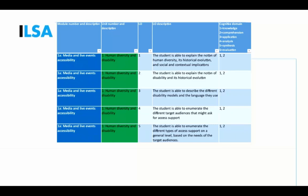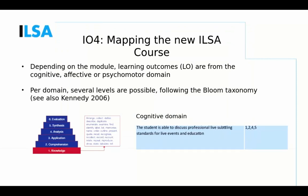This is a fragment of the Excel spreadsheet. In the first column is the name of the module — 1a. The second column shows one of the units of that module, in this case 'human diversity and disability.' There are five learning outcomes for that particular unit described across subsequent columns. When designing those learning outcomes, we had to take the different types into account: cognitive, affective, and psychomotor domains, with several levels per domain following Bloom's taxonomy, also used by Kennedy (2006) in his 'Writing and Using Learning Outcomes: A Practical Guide.'